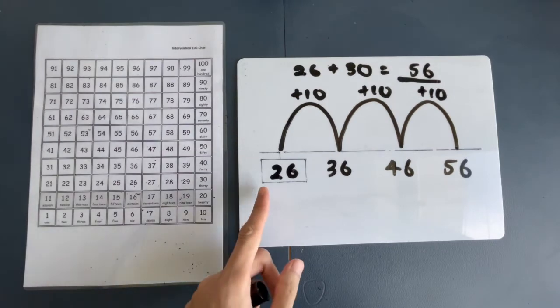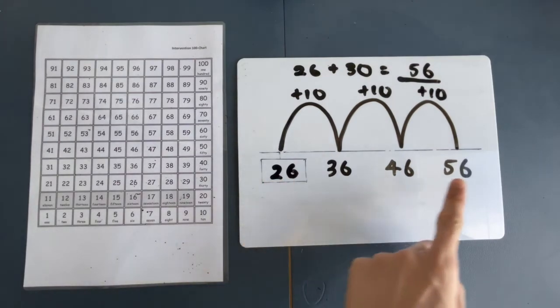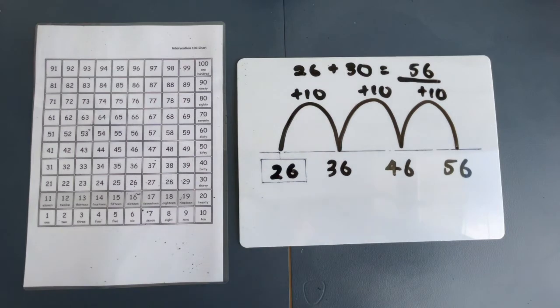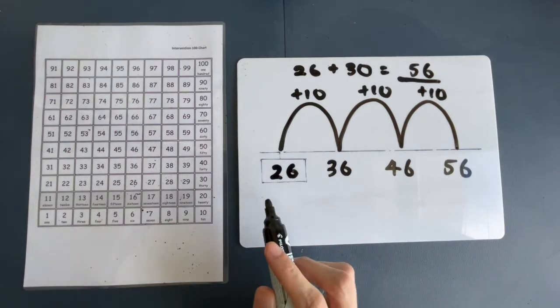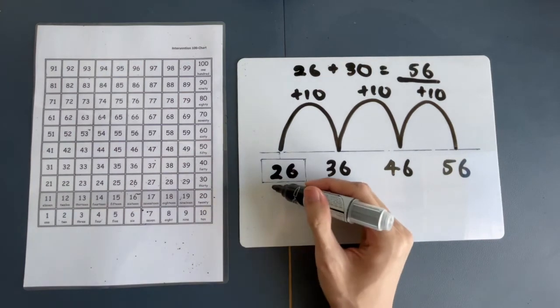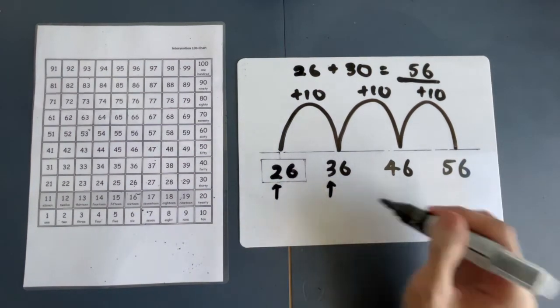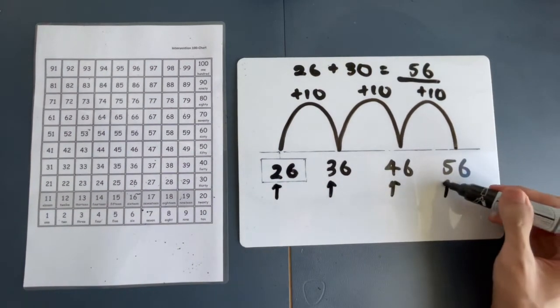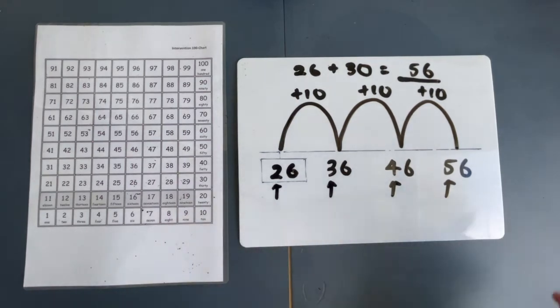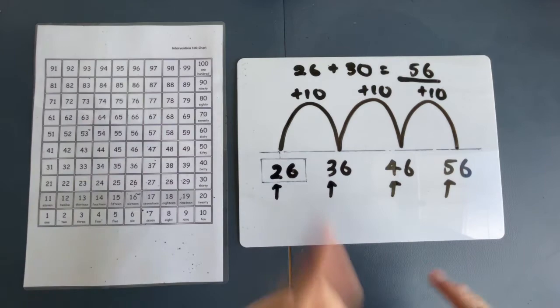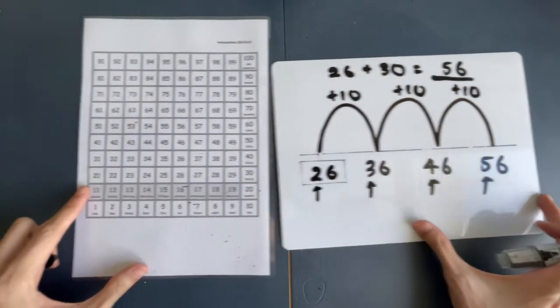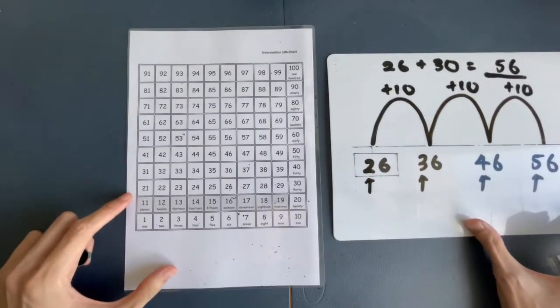And then, you might ask me, why is the front number always changing, but the back number doesn't? Because we are jumping in 10s. So, only the tens place changes. The ones place remains the same. It's the same number. How do I illustrate this? We use the number chart. Look here.